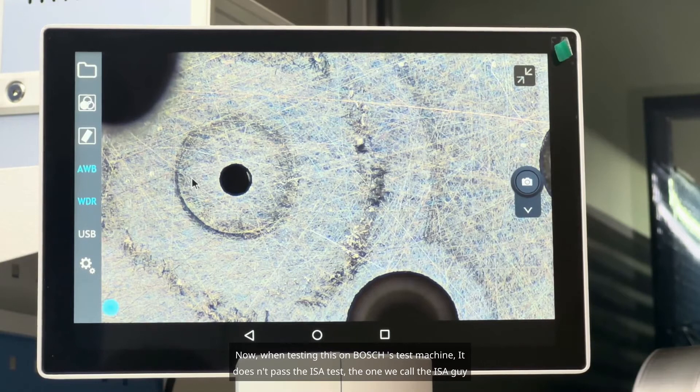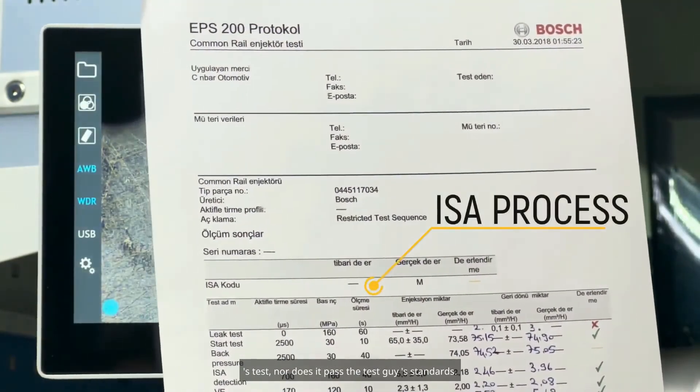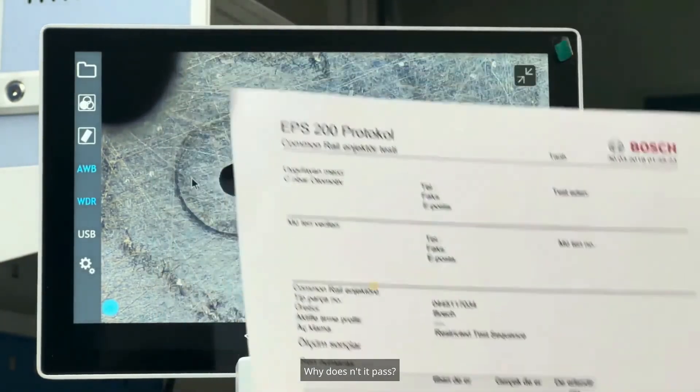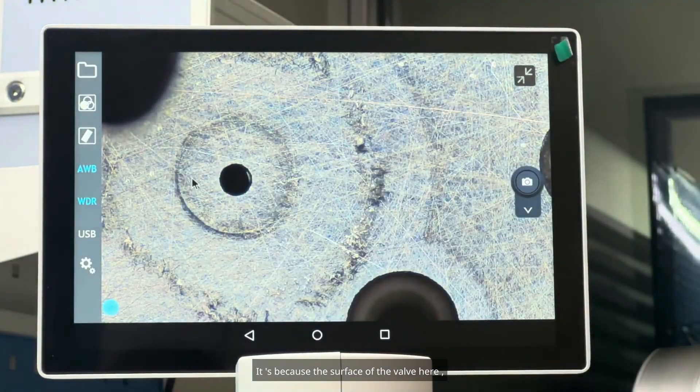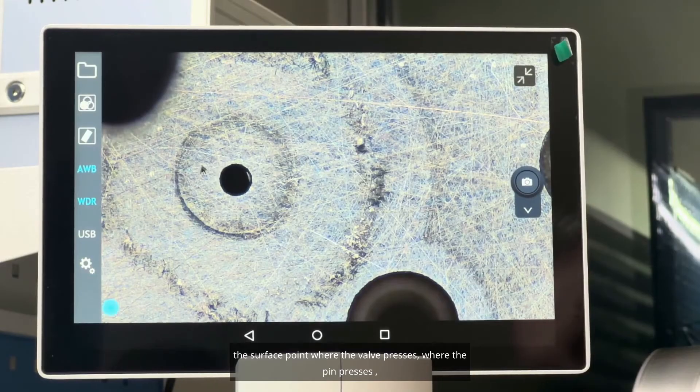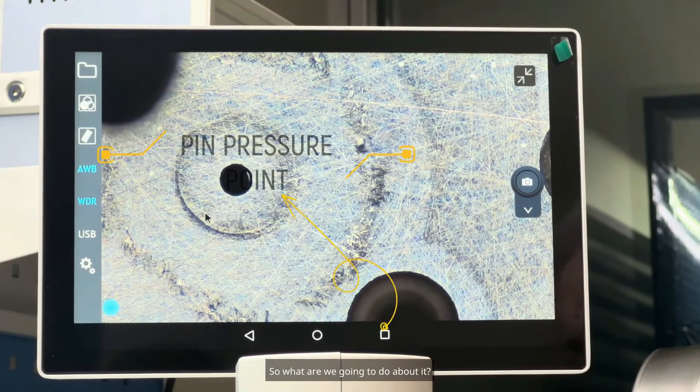Now, when testing this on Bosch's test machine, it doesn't pass the ISA test, the one we call the ISA guy's test, nor does it pass the test guy's standards. Why doesn't it pass? It's because the surface of the valve here, the surface point where the valve presses, where the pin presses, could be worn out. So, what are we going to do about it?